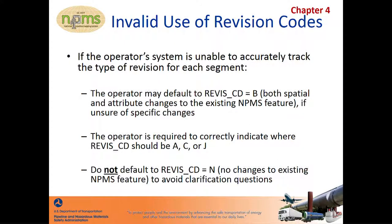For operators unable to track every single edit applied to the pipeline segment, we have allowed operators to default to revision code B for both attribute and spatial changes. However, any and all pipelines being added to the NPMS for the first time for the OPID must be identified and attributed with the most appropriate addition-related revision code value. If a pipeline has a revision code that indicates it already exists in the NPMS national layer when it is actually newly submitted, NPMS staff will seek clarification and possibly resubmission. To avoid delays in reviewing your NPMS submission, please be sure to have the correct revision code values before uploading your data submission to the NPMS.